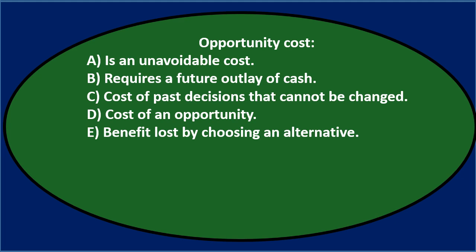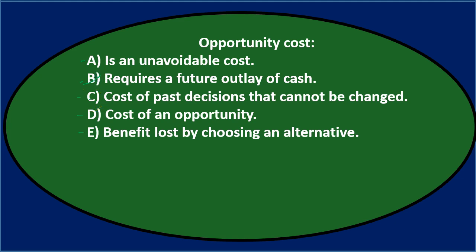We'll go through these answers using the process of elimination. Option A, an unavoidable cost — we might say that sounds kind of familiar, so I'll keep A for now. Option B says it requires a future outlay of cash — I don't see anything related to a future outlay in opportunity cost, so I'll cross that one out. Option C says cost of past decisions that cannot be changed — that sounds kind of familiar too, so I'll keep that for now.